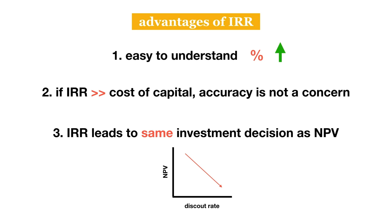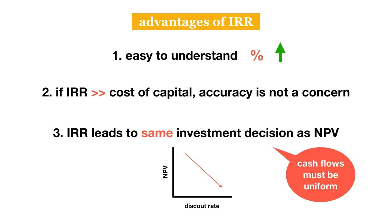For this alignment to hold, cash flows must be somewhat uniform, meaning that they are spread over the life of the project and are not too front or backloaded.